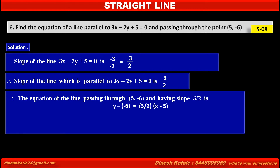Therefore, the equation of the line passing through the point (5, -6) and having slope 3/2 is: y - y₁, that is, y - (-6) = slope 3/2 into x - x₁, that is, x - 5.